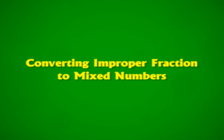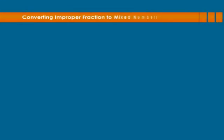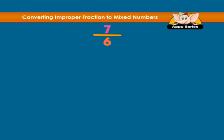Converting Improper Fraction to Mixed Numbers. Take the fraction 7 over 6.